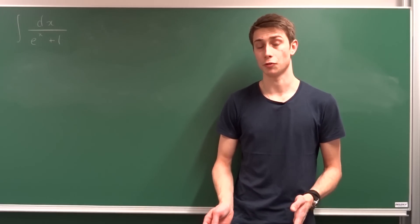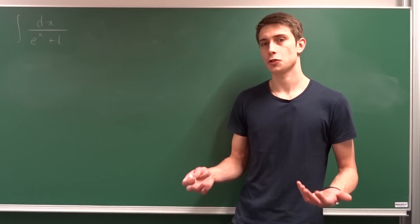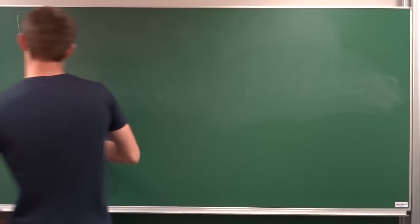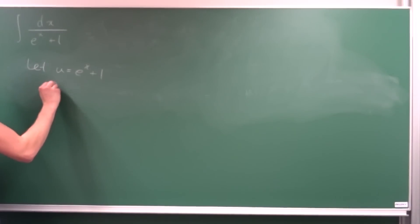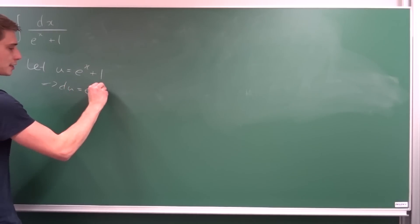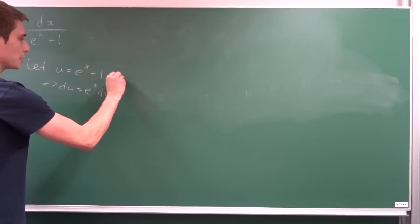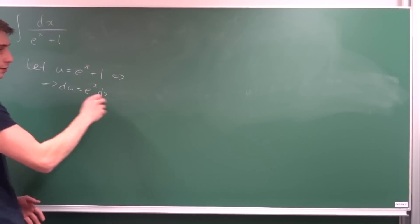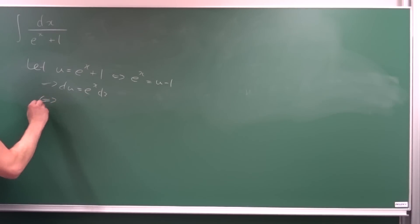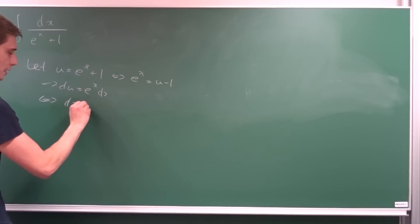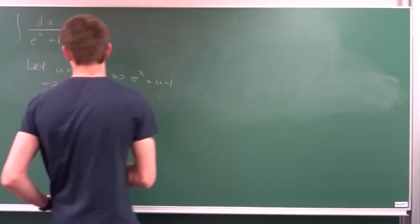For the second method, we use partial fraction decomposition and a simple substitution. We substitute the denominator: let u equal e to the x plus 1. Differentiating gives du equal to e to the x dx. Since u minus 1 equals e to the x, we get dx equals du over u minus 1.